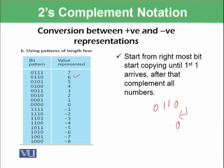This 0 would be reproduced as it is. First 1 is reached, that would be written. And after this first 1, all of the things will be changed. 1 would be changed to 0 and 0 would be changed to 1. This will become 1010. You can see minus 6 is represented with 1010. Similarly, you can go from negative to positive as well.